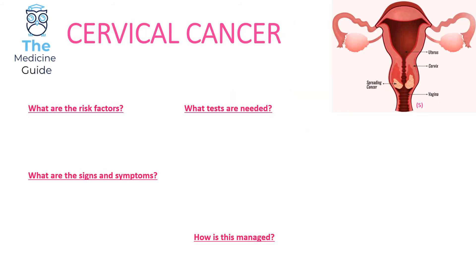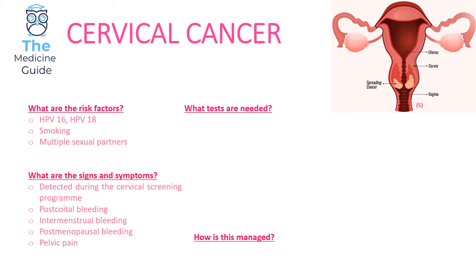Now we're going to look at cervical cancer. The risk factors are HPV strains 16, 18, and also 33, with HPV 16 and 18 most commonly leading to cervical cancer. Other risk factors include smoking and having multiple sexual partners. Cervical cancer is usually picked up during the cervical screening programme, which is why it's really important that women engage with it. Other signs include post-coital bleeding, inter-menstrual bleeding, post-menopausal bleeding — where your first line concern would be endometrial cancer before considering cervical — and pelvic pain.